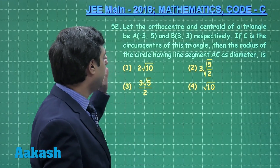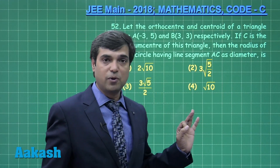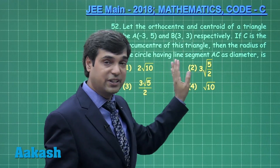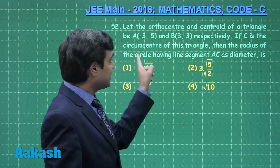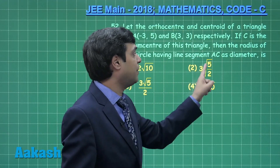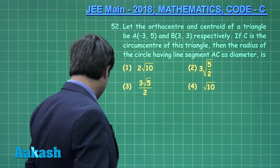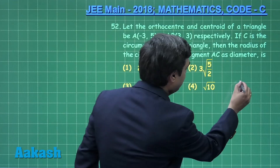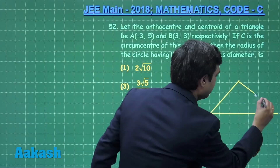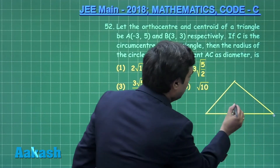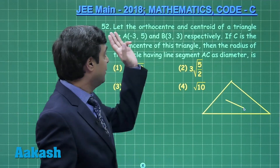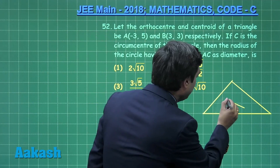Moving to question number 52, again from coordinate geometry. Let the orthocentre and centroid of a triangle be given. If C is the circumcenter of this triangle, then the radius of the circle having line segment AC as diameter — let us draw this figure. Drawing a triangle, let us consider the three points lying on a straight line: the centroid, orthocentre, and circumcenter.